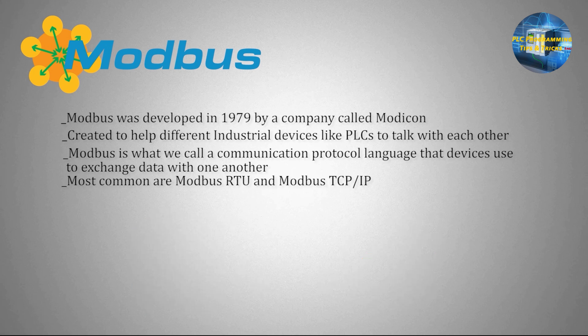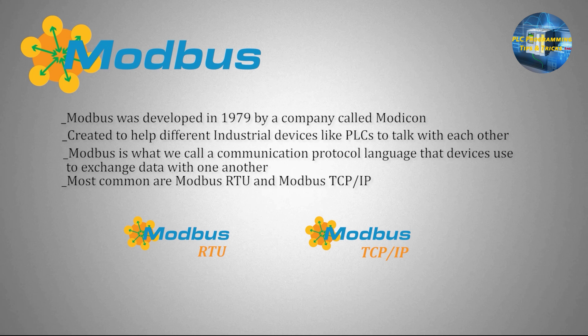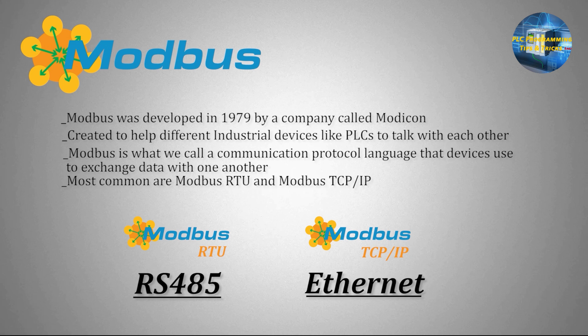There are a few types of Modbus, but the most common are Modbus RTU and Modbus TCP. In this video, we are going to focus on the two major forms: Modbus RTU, which uses RS-485, and Modbus TCP-IP, which uses Ethernet for communication.